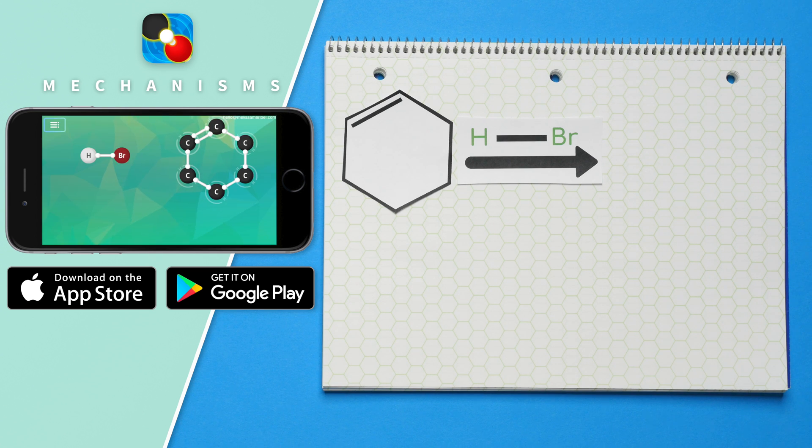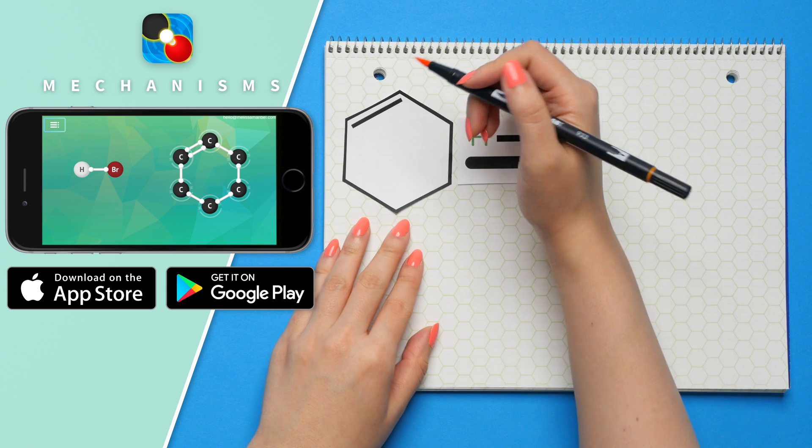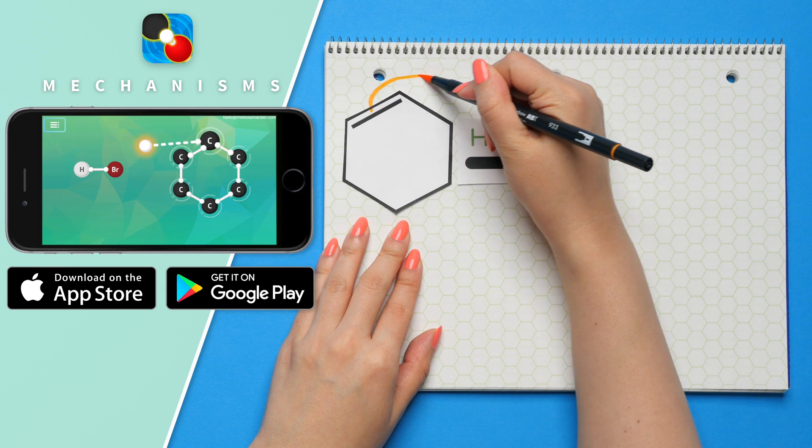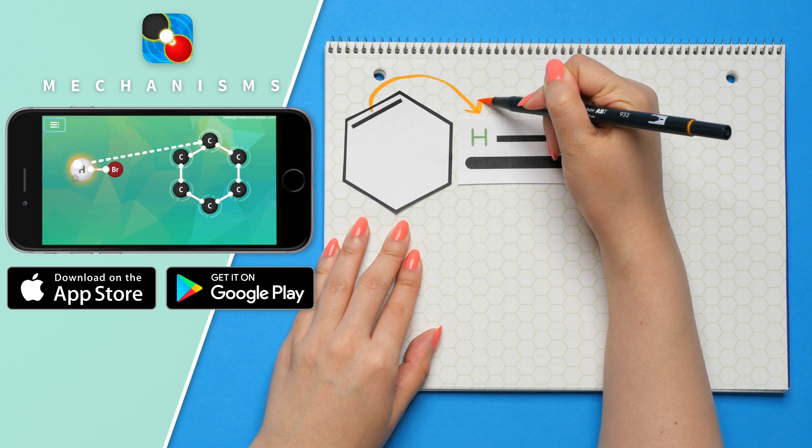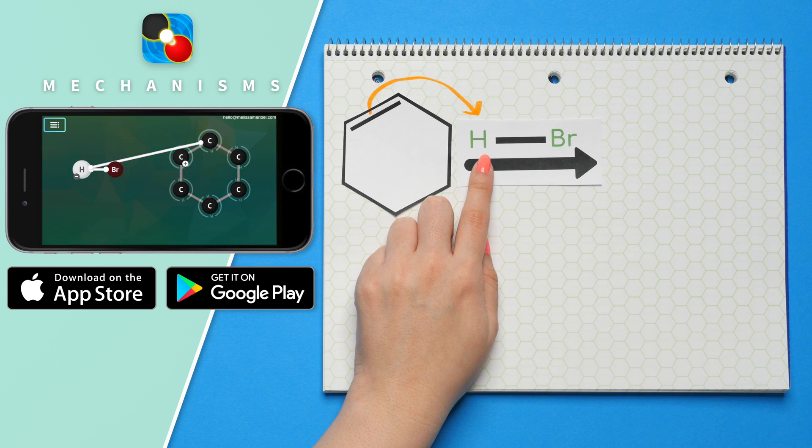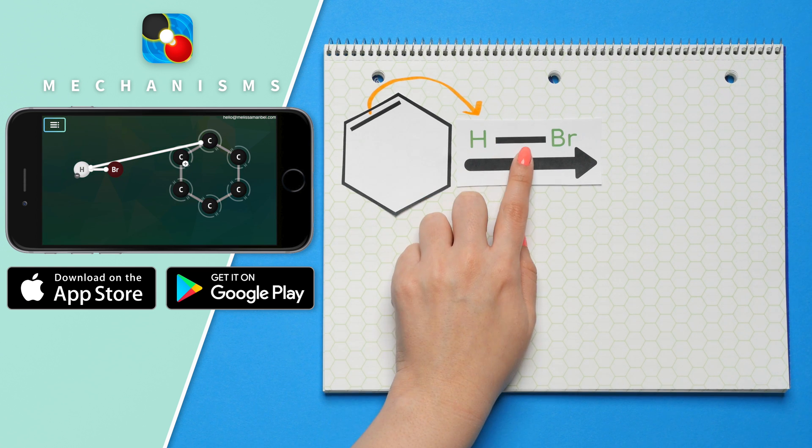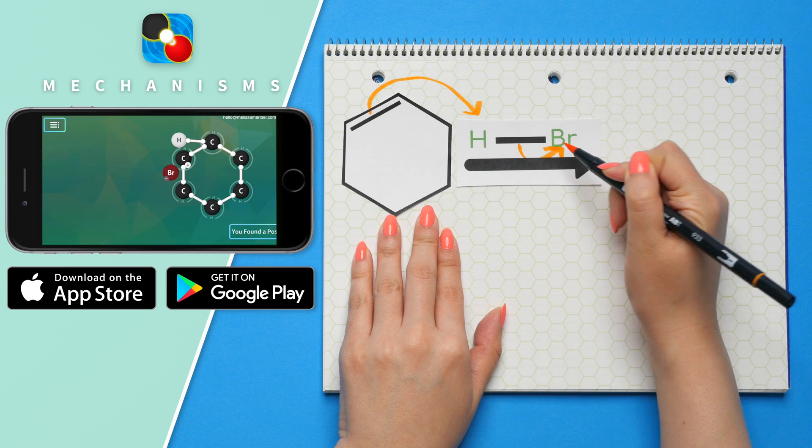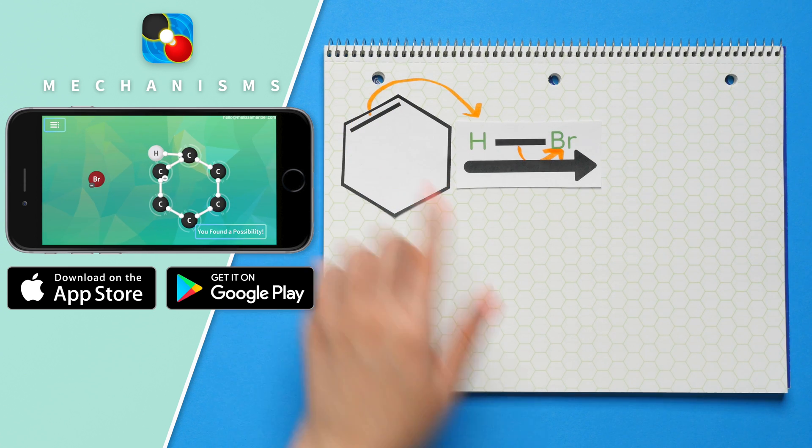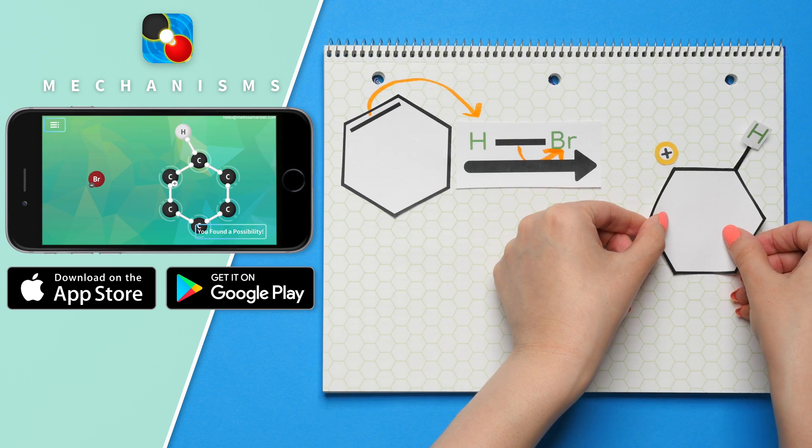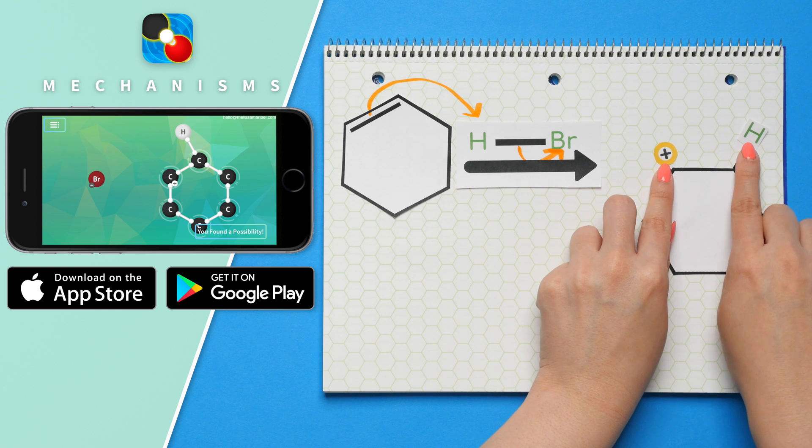So step one, protonation. This is where the electrons in the double bond reach out and grab the hydrogen. Since the hydrogen is being taken away from the bromine, the electrons in this bond now go to bromine. For the carbons that have the double bond, one carbon is now the carbocation and the other has the hydrogen.